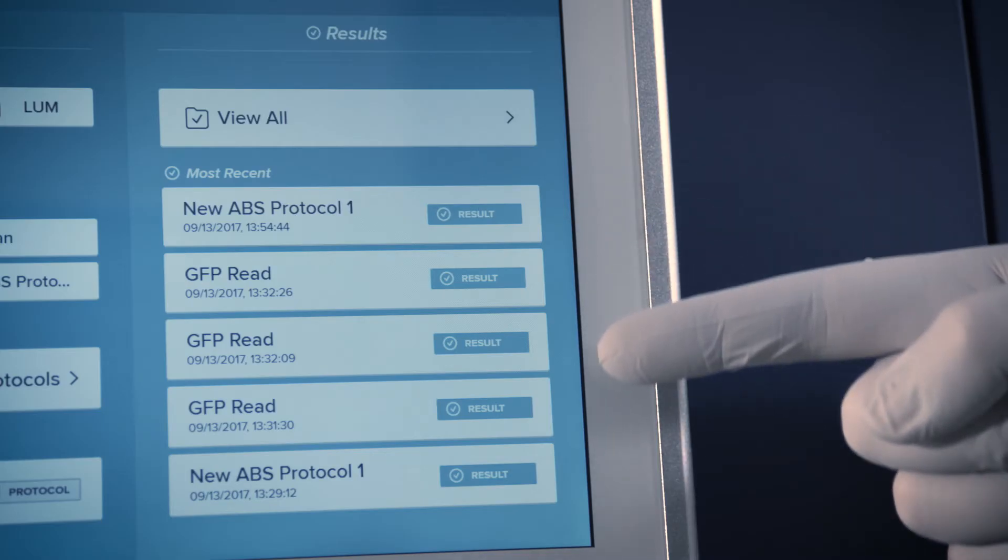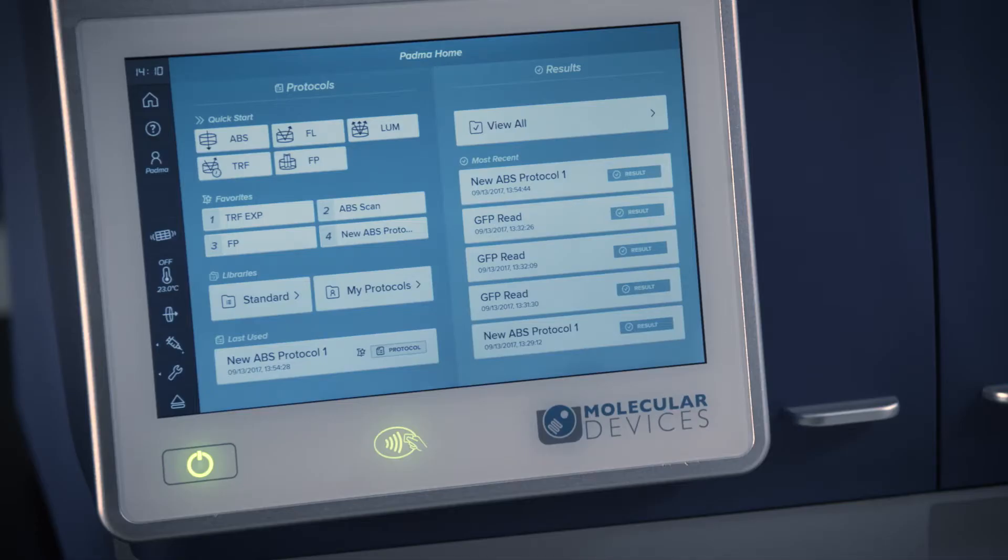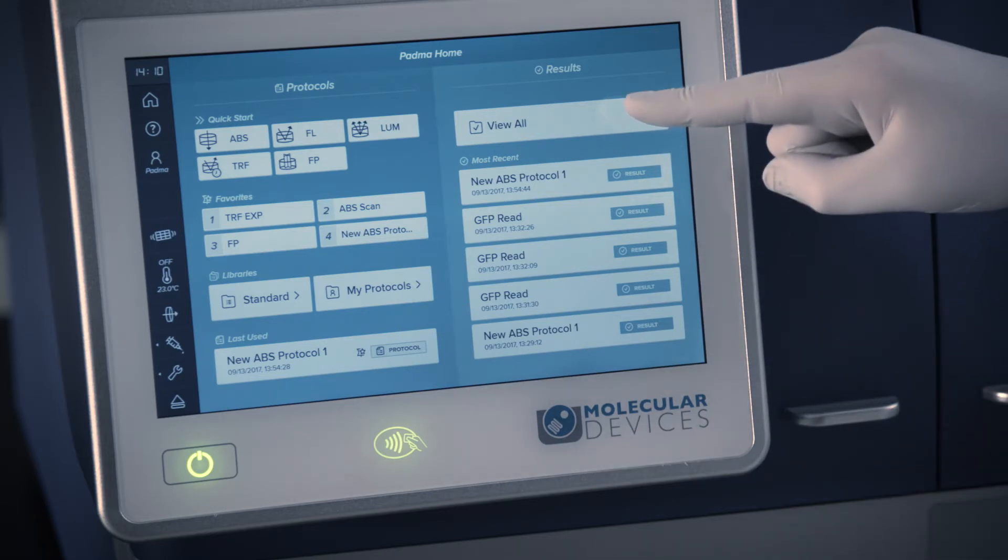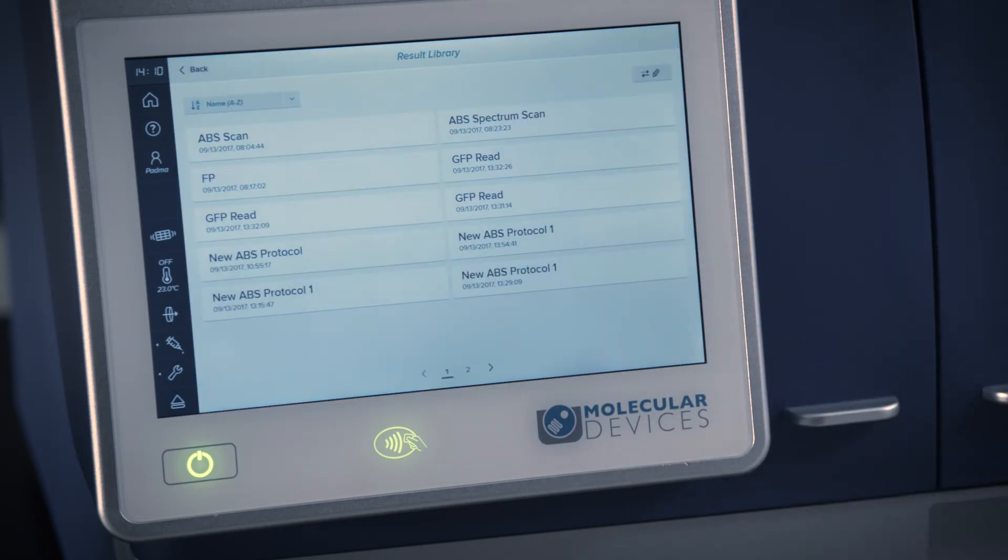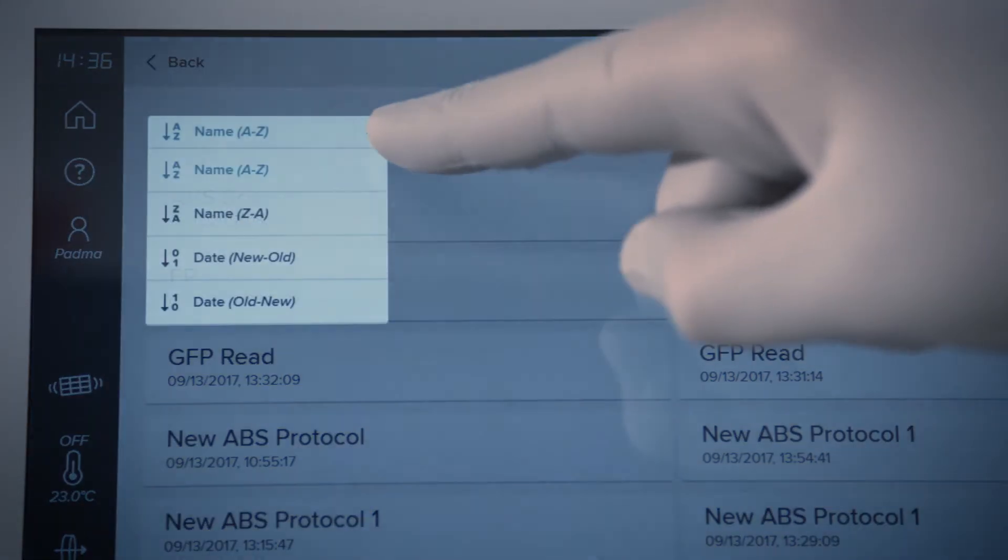Recent results files can be easily found on your homepage in the most recent results list. The remaining results files can be found in the results library, which you can access from the homepage by touching the View Results button. Easily find your results by arranging them in alphabetical order or in date order.